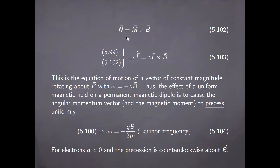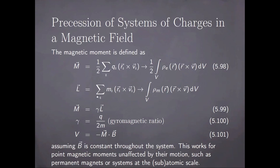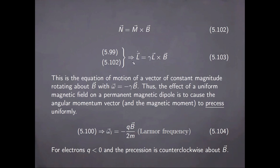For such a system, the torque is given by the cross product between the magnetic moment and the magnetic induction. And if we put this result together with equation 5-99, so with the definition of the magnetic moment in terms of the orbital angular momentum, we can immediately obtain an equation of motion for the orbital angular momentum in terms of the cross product written here. But this is just the equation of motion of a vector of constant magnitude that is rotating about the direction of the magnetic induction with the frequency omega given by this value.